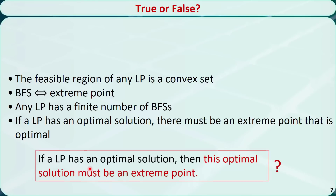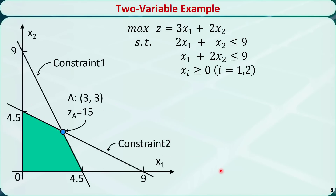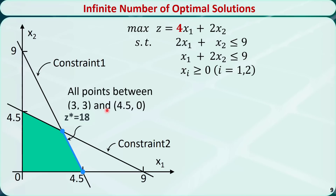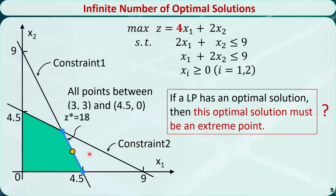Now compare the last theorem with this statement: if a linear programming problem has an optimal solution, then this optimal solution must be an extreme point. True or false? The answer is false. As a counter example, the original problem has a single optimal point, but if we modify the objective function by changing a coefficient from 3 to 4, we get an infinite number of optimal solutions between point (3, 3) and (4.5, 0). This linear programming problem does have optimal solutions, but the middle point — which is optimal — is not an extreme point. This is a counter example, so the statement is false.